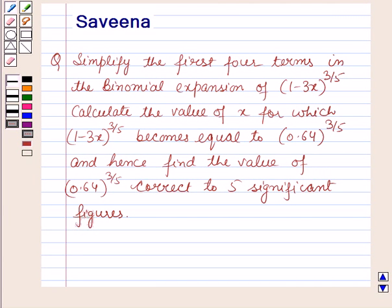Hello and welcome to the session. In this session we will discuss a question which says: simplify the first four terms in the binomial expansion of (1-3x)^(3/5), calculate the value of x for which (1-3x)^(3/5) becomes equal to 0.64^(3/5), and hence find the value of 0.64^(3/5) correct to 5 significant figures.